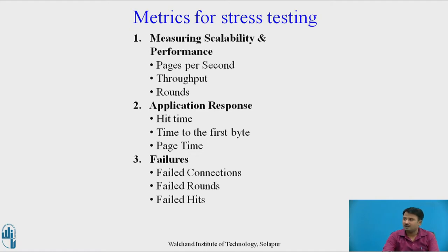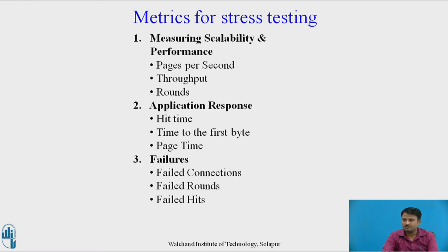Metrics for stress testing include: measuring scalability and performance; pages per second, which measures how many pages have been requested per second; throughput; and basic metric response data size per second. Rounds: number of times test scenarios have been planned versus number of times the client has executed. Application response — hit time: average time to retrieve an image or a page. Time to first byte: time taken to return the first byte of data or information. Page time: time taken to retrieve all information in a page. Failures — failed connections: number of failed connections refused by the client, i.e., weak signal. Failed rounds: number of rounds that fail. Failed hits: number of failed attempts done by the system, such as broken links or unseen images.